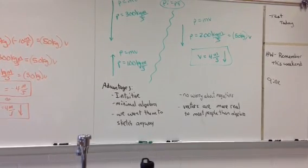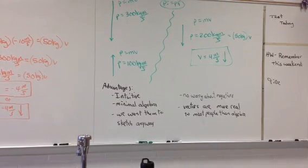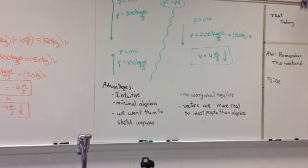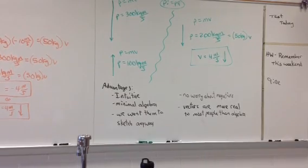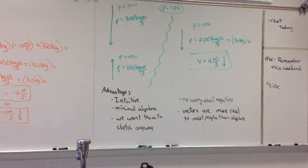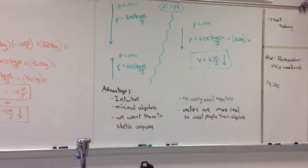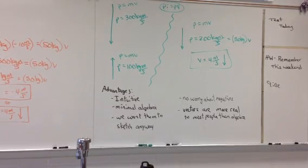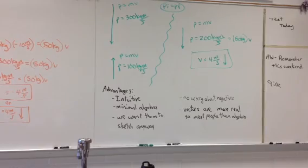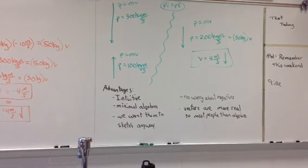So then on the right hand side, you have an arrow, which is in the same direction as a 300 kilogram meter per second arrow. The value is 200 kilogram meters per second. And you have P equals MV, 200 equals 50 times V. Oh, it's four. Absolutely minimal algebra.